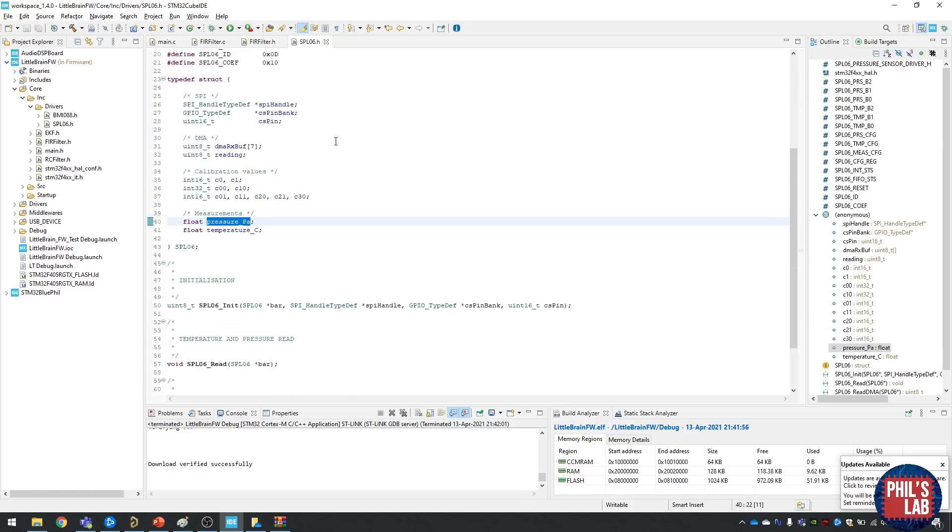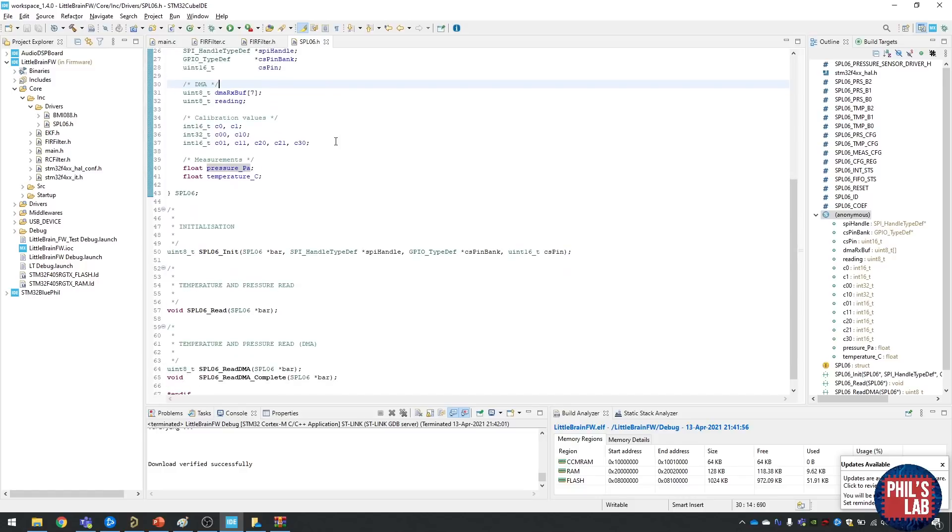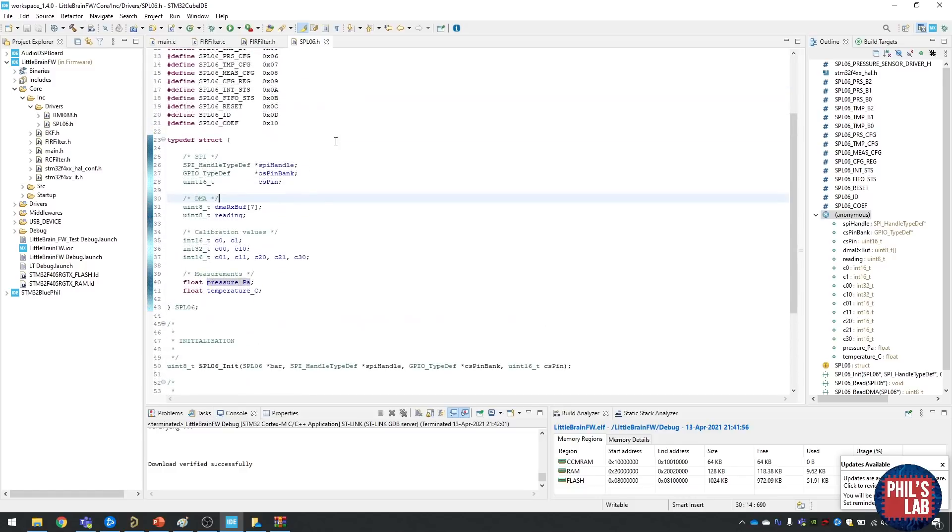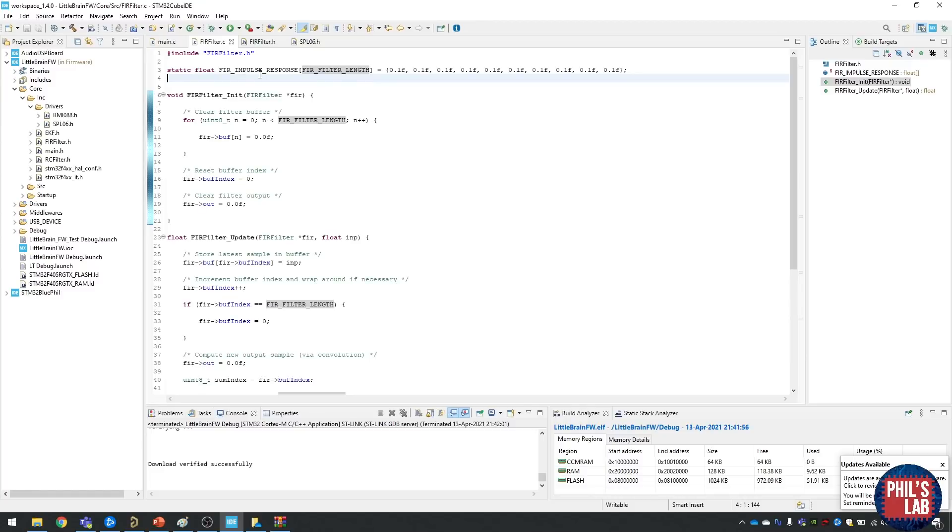Now I also wrote a driver for the SPL06 which is the barometric pressure sensor, and with that via SPI I can then get the raw pressure data values. In the FIR filter.c file you can see that there's an FIR impulse response and this is what we need to modify to then do a moving average filter. As you can see here, I've already adjusted it to a 10-point moving average filter. That's why the filter coefficients are 1 over 10, 1 over 10, 1 over 10 and so on 10 times, or 0.1, 0.1, 10 times.